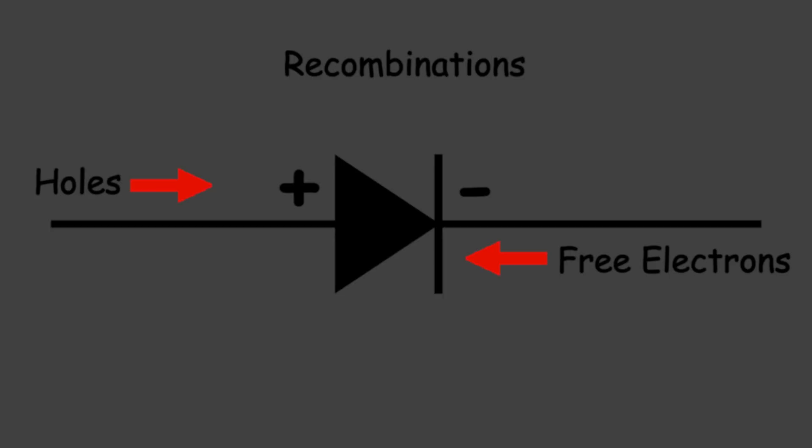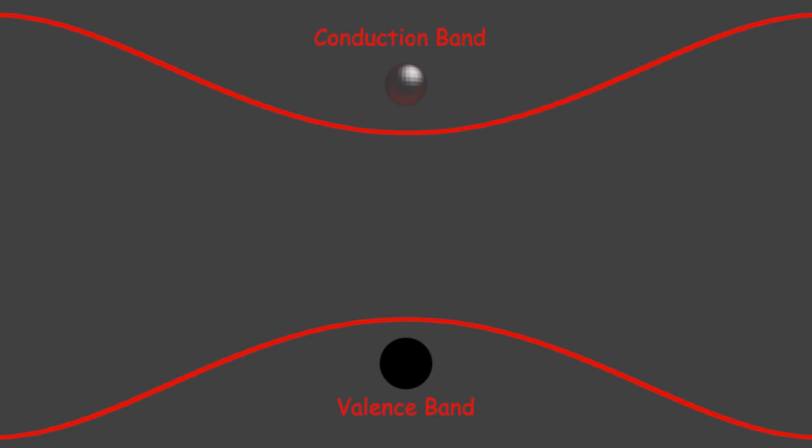During this recombination, electrons in the conduction band, that is, free electrons will jump to the hole in valence band. During this jump of electron from conduction band to valence band, electron emits energy in form of photon.